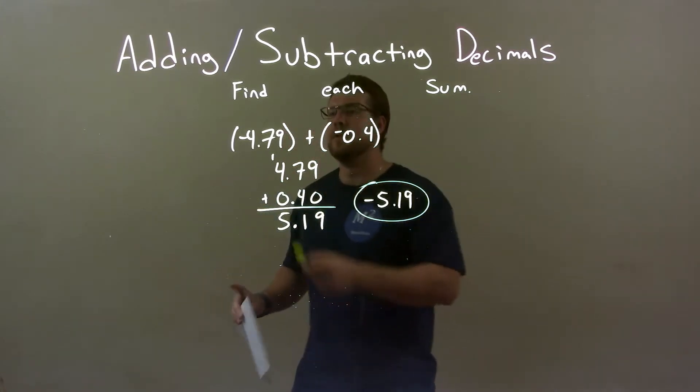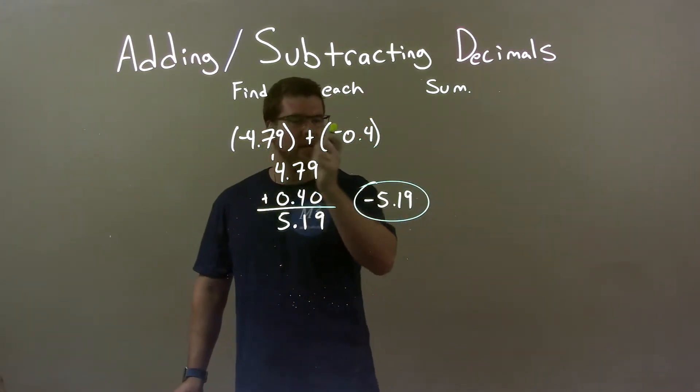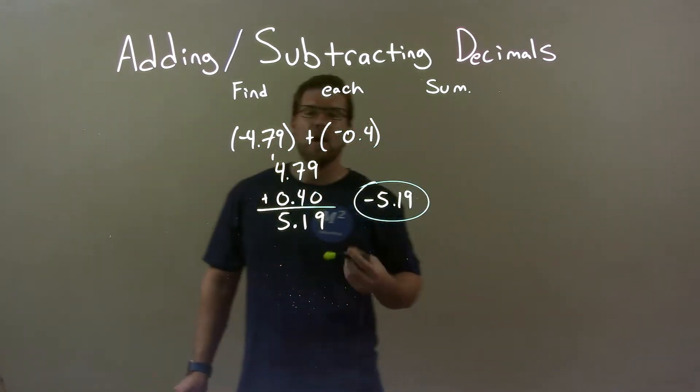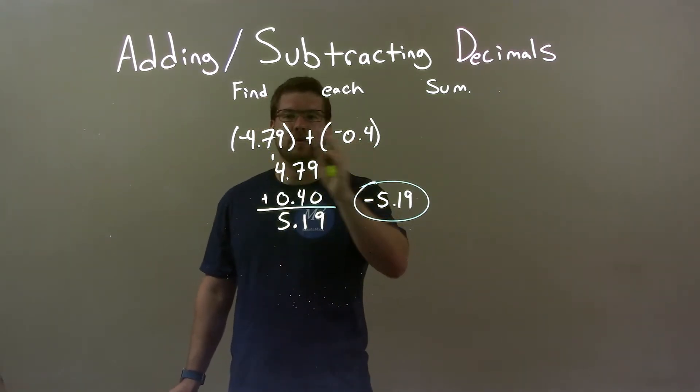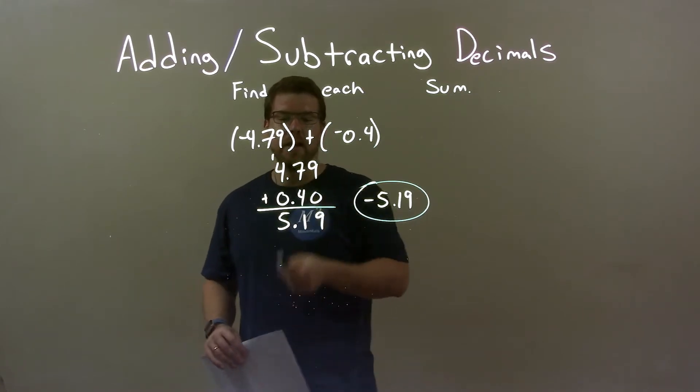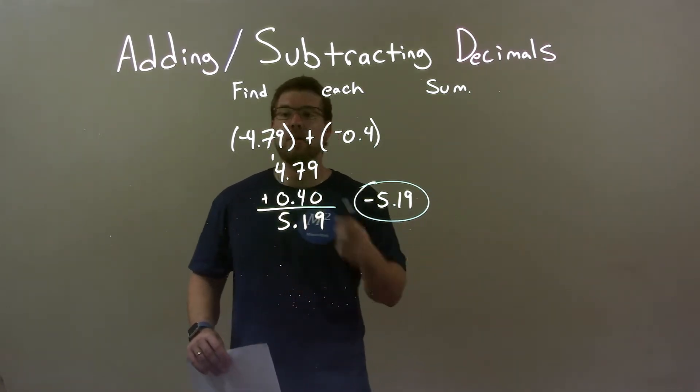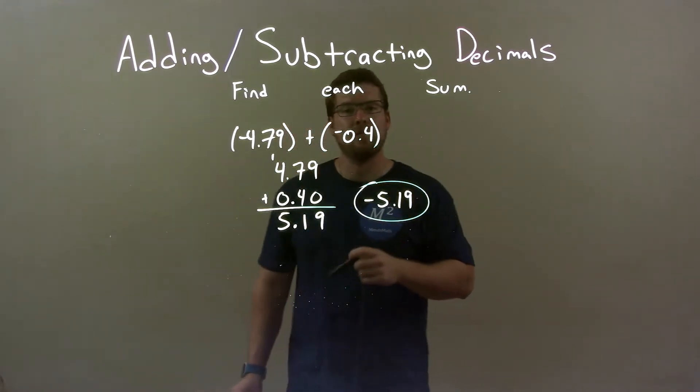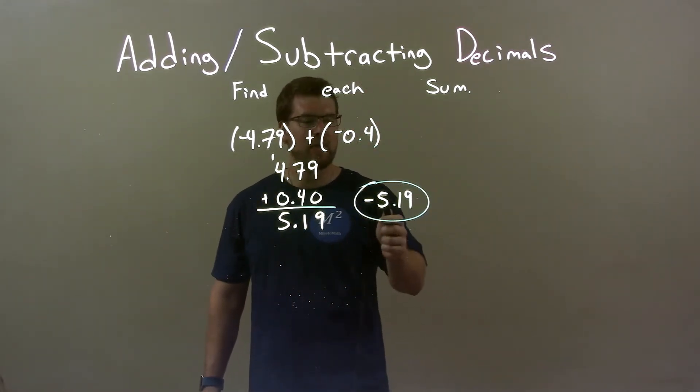So, quick recap. We're given negative 4.79 plus negative 0.4 and we have to add them. I treat them like they're both positive because since they're both negative, we're going to have a larger negative. So, I just treat it like it's positive. Add the two numbers normally. Got 5.19. Then, knowing that it's going to be a negative number, slap down the negative and there we have, again, our final answer, negative 5.19.